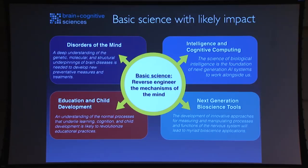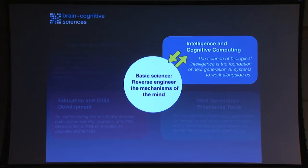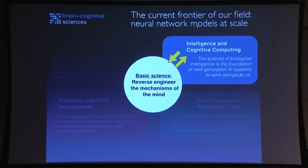One of the things we like to say is that the science of biological intelligence — understanding how the brain gives rise to intelligent behavior — is the foundation of next-generation artificial intelligence systems to work alongside us. I don't want you to think this is a one-way street. What is really happening is that this is a very fruitful, interactive street, because the frontier of our field is building neural network models at scale.